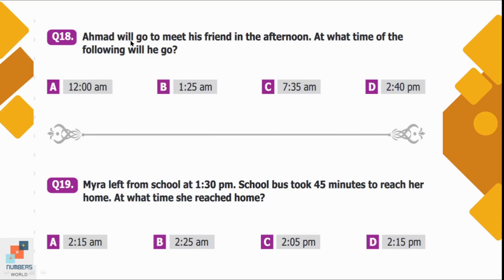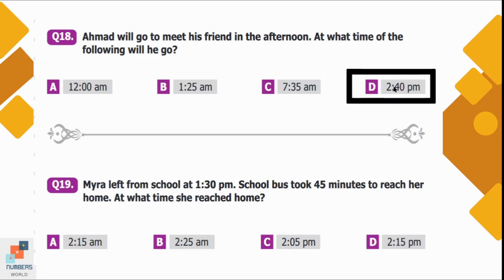Question number 18: Ahmed will go to meet his friend in the afternoon. At what time will he go? Looking at the given times, options A, B, and C are given in AM, which is morning time. Option D is 2:40 PM, which is our correct answer — he met his friend at 2:40 PM in the afternoon.